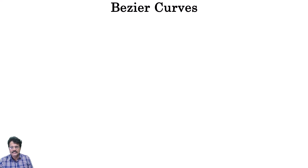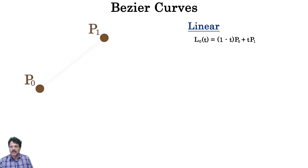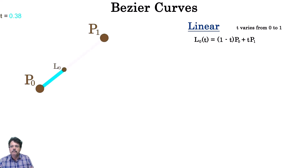Bézier curves are actually defined by a set of control points. For example, to draw a line segment we need two points — P0 and P1. To get to any point in these segments we use a linear parametric function, equivalent to a linear interpolation with a variable t whose value changes from 0 to 1. For t equal to 0 it will be at point P0, for t equal to 1 we get P1, and for each value between 0 and 1 we get a point along the line segment linking P0 and P1.